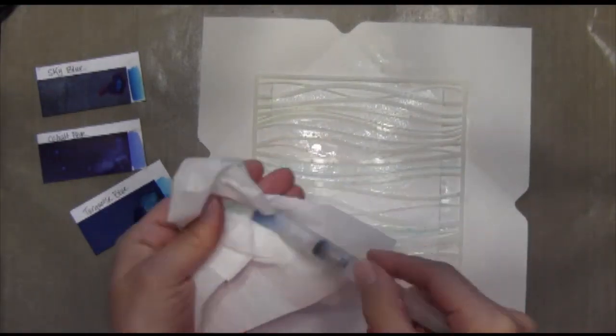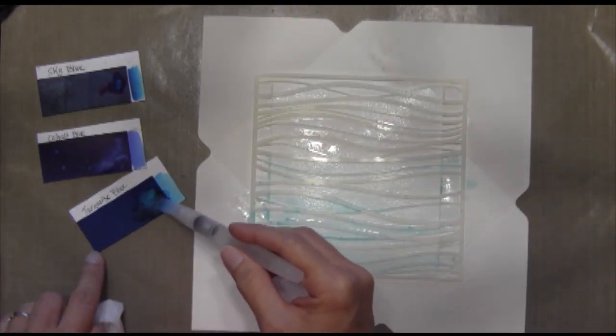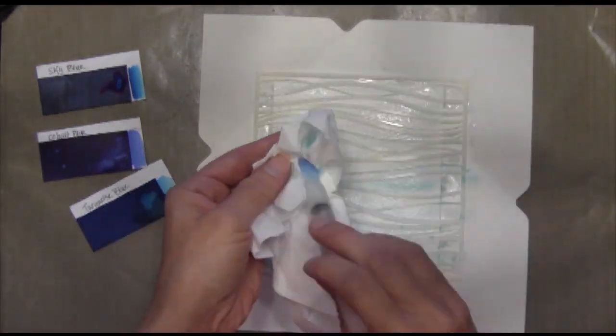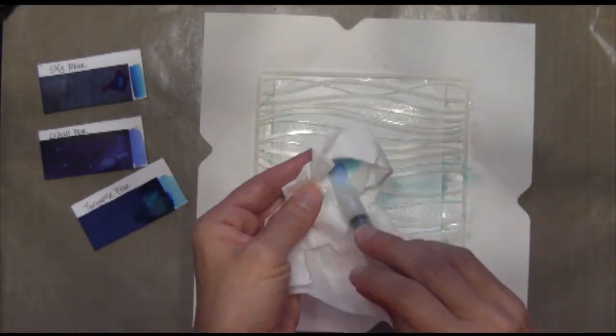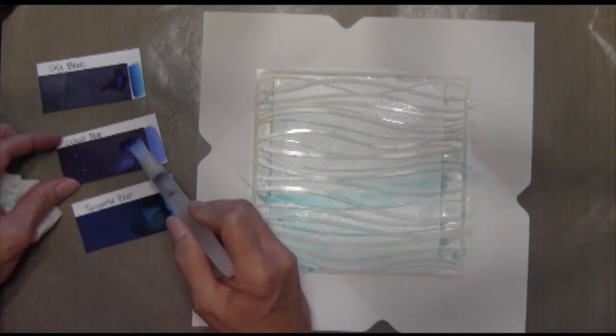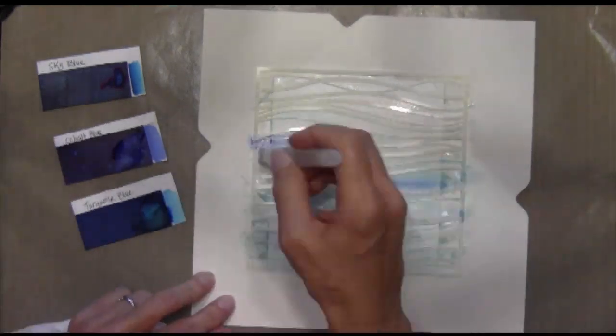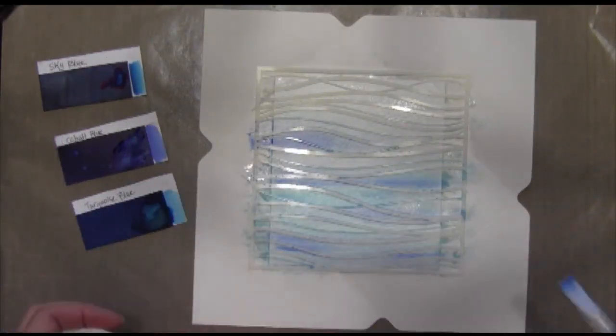So this is a Ranger broad tip water brush and it has water in the base of the brush. So if you squeeze it, some water will come out. And so I'm kind of using a tissue to wipe up any excess water because it is very watery and it's kind of hard to get color when you have so much water. So I'm pulling out a little bit of the water from the brush so that I get more water on my paper.